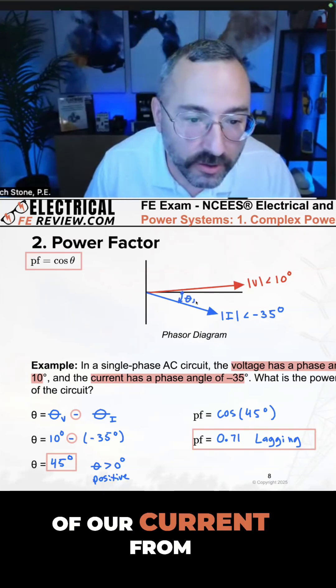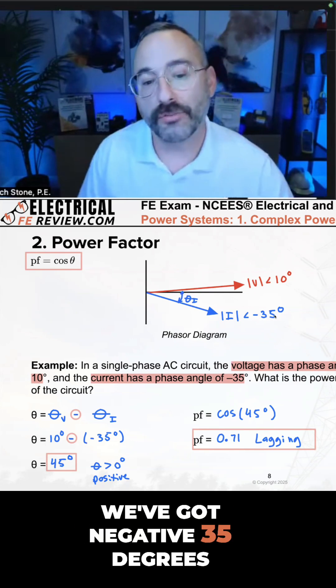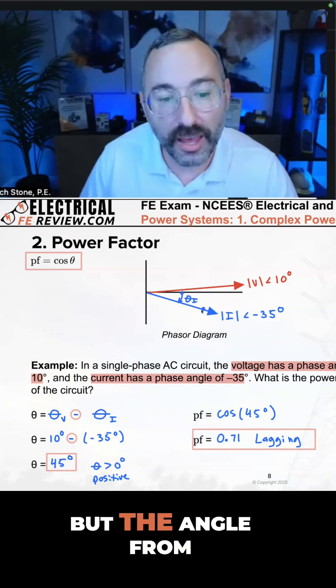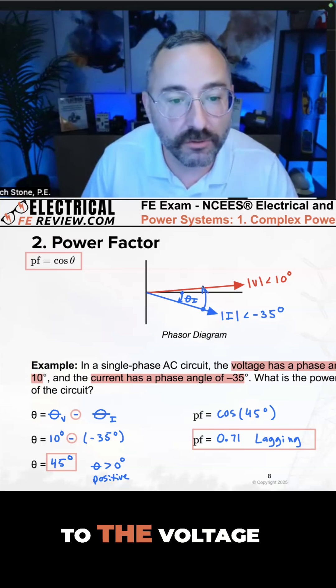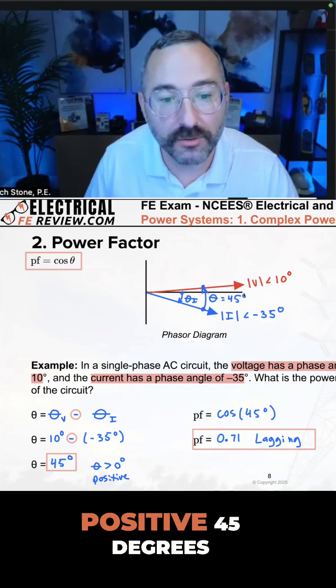This is the angle of our current from the zero axis to the current phasor—we've got negative 35 degrees. But the angle from the current all the way up to the voltage, that's going to be our power angle: positive 45.